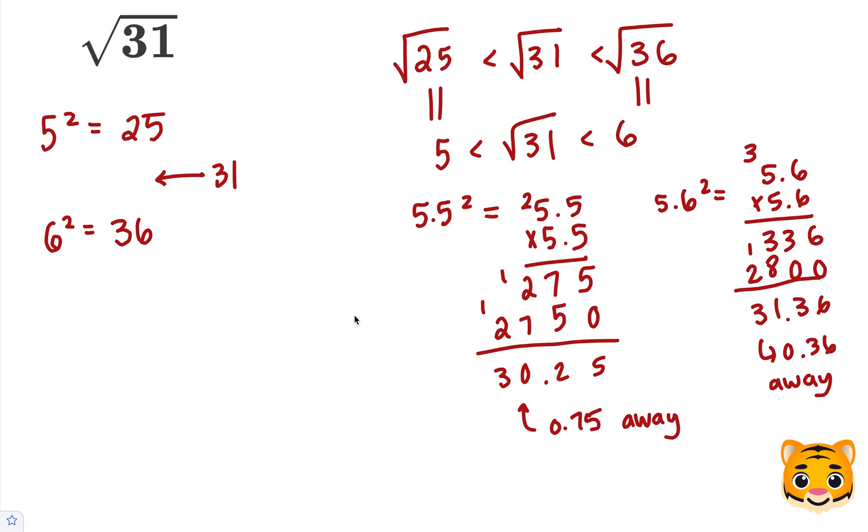Therefore, 5.6 is a better approximation, and 5.6 squared is about 31. So we can take the square root of both, and the square root and the squared cancel, so we get 5.6 is approximately the square root of 31.